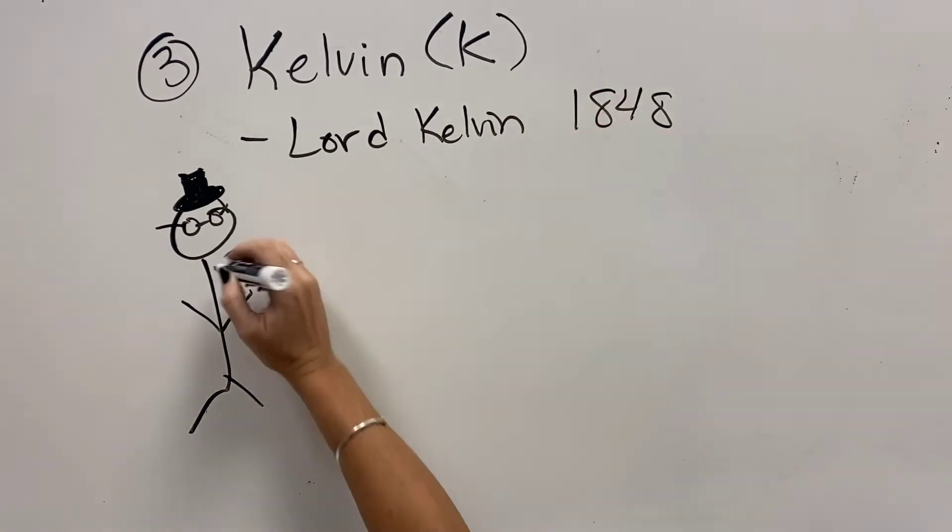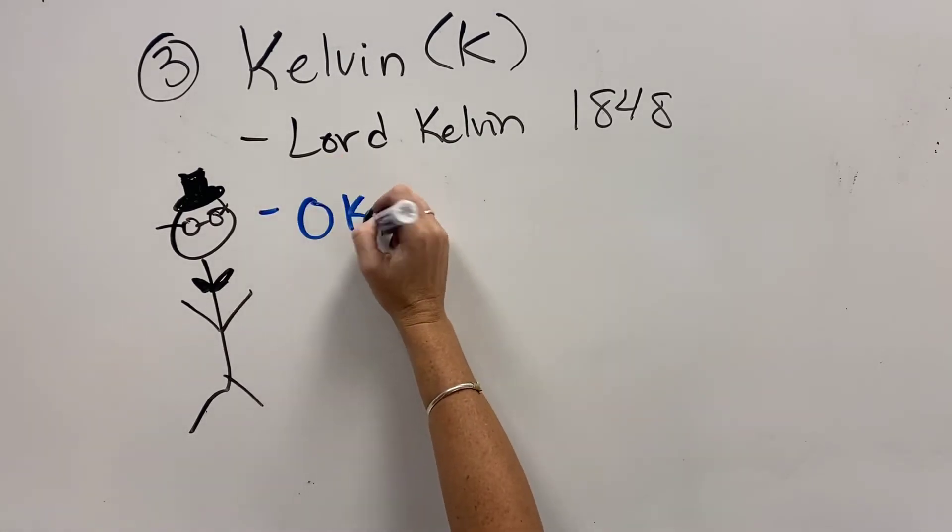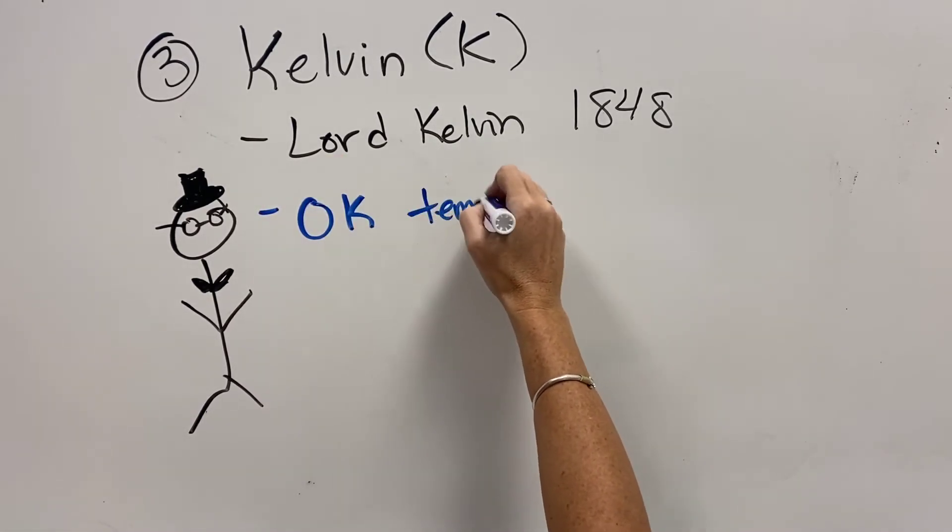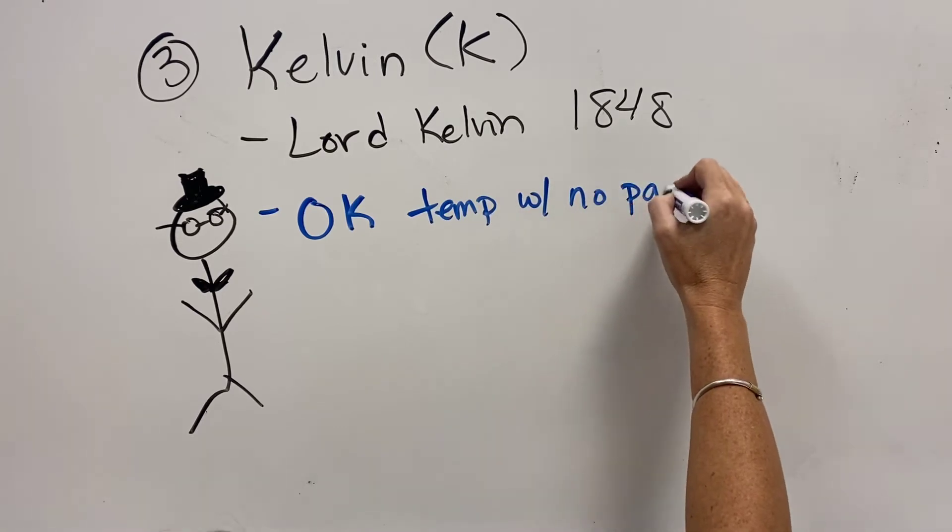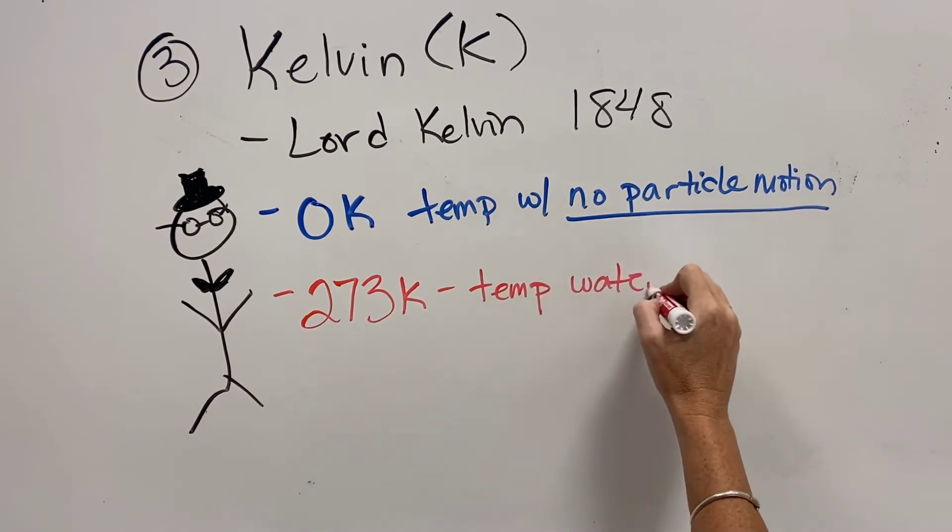So along comes Lord Kelvin in 1848, a full century later. And by this time, physicists had realized that temperature is the measurement of the movement of the particles, right? That heat makes particles move. So he said, listen, zero should be the temperature that particles do not move at all because particles can't negatively move. You're either moving or you're not moving.